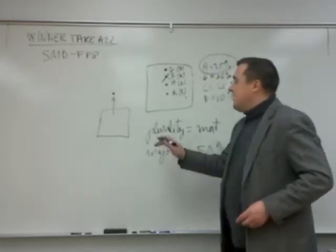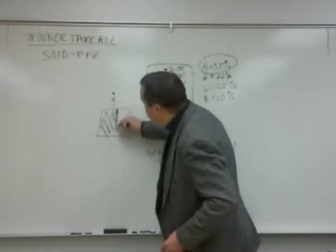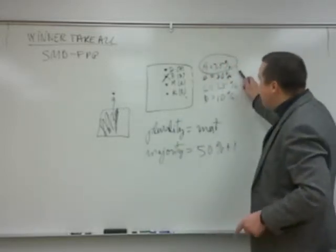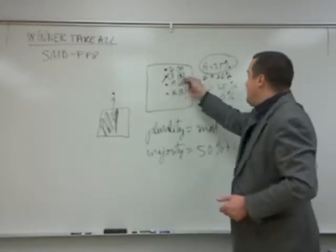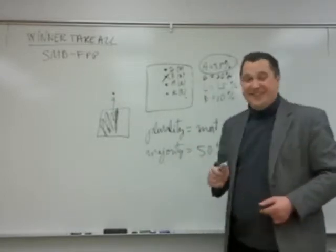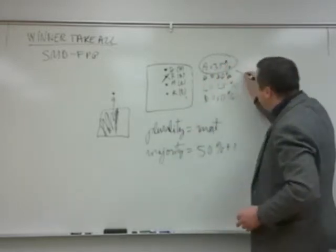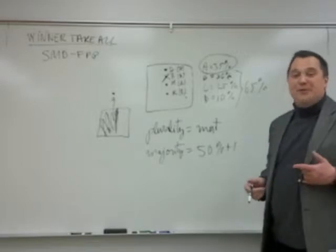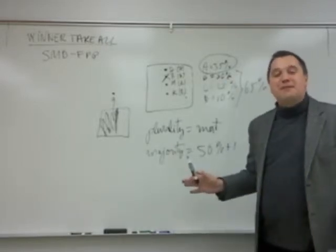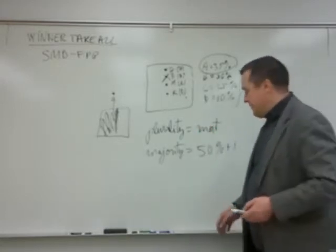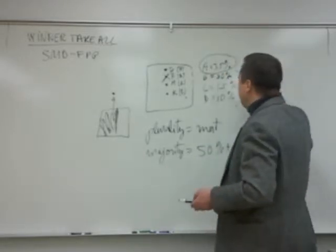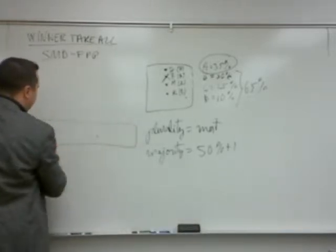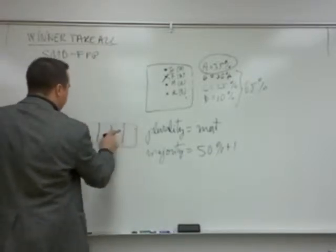So what happens to the other 65%? Which is the majority of the district — the large proportion of people who don't want Jim from party A. What happens to them? This is where we get to the problems of this electoral system. Let's say in the country you have 10 districts. From each district, with this single member district first past the post system, how many seats in the parliament? Obviously 10 seats. Now let's assume the same result happens in every single district.